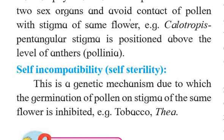The next device is called self-incompatibility, also called self-sterility. It is a very important device that the plant has developed. The plant has developed such a genetic mechanism that even if its own pollen grain gets deposited on its own stigma, it will not germinate.